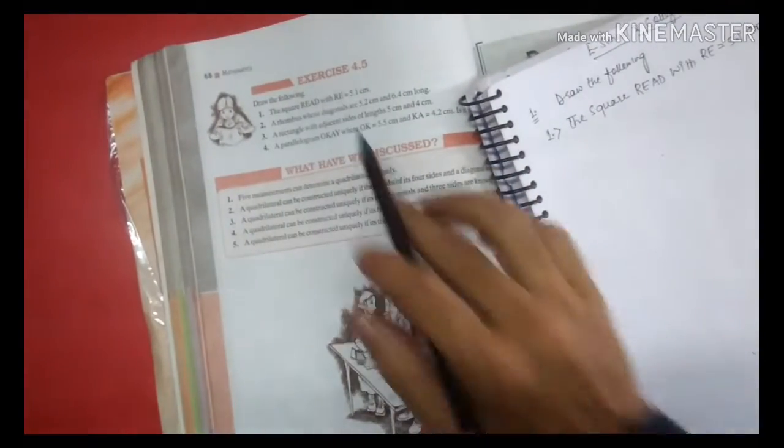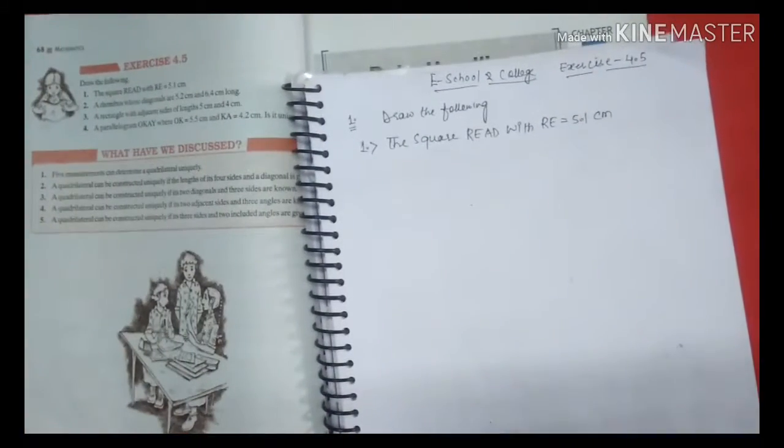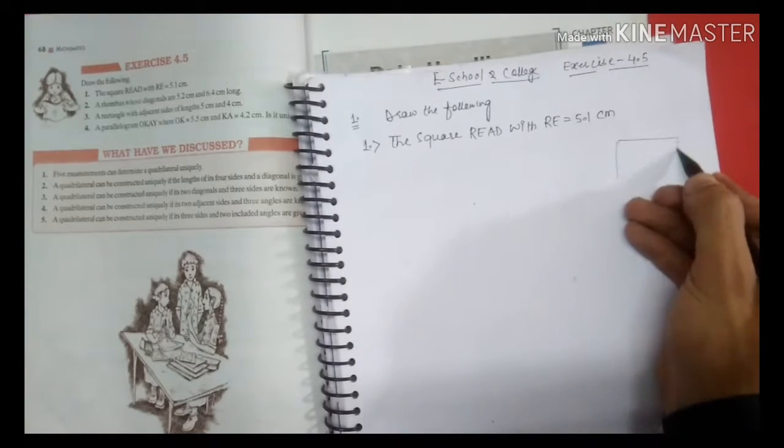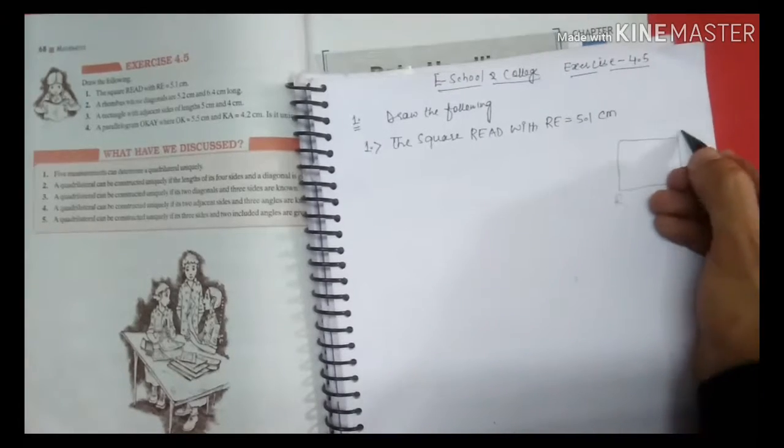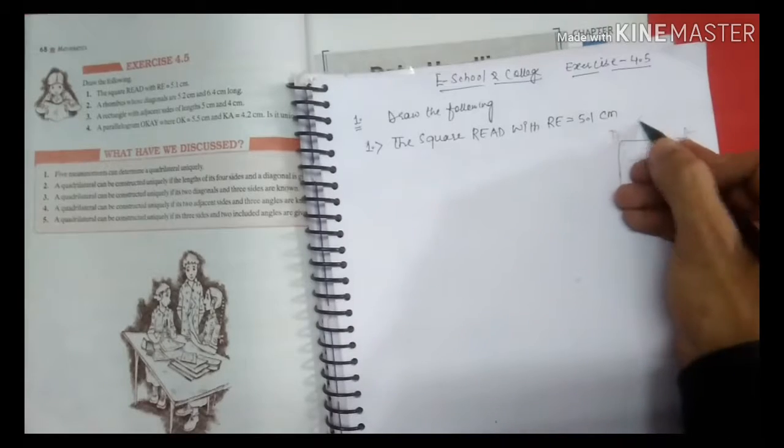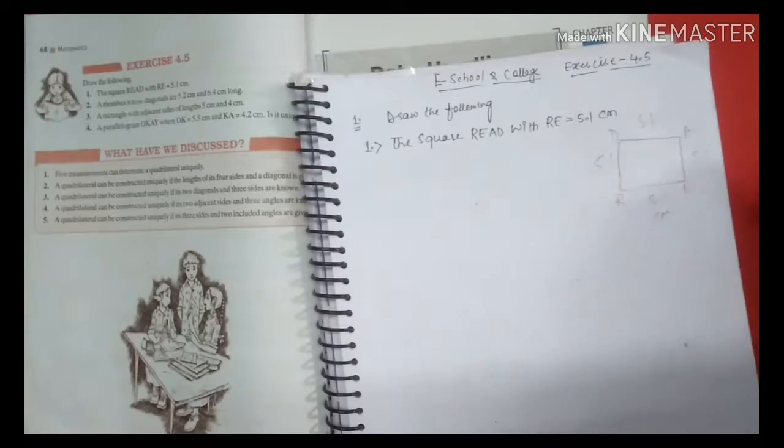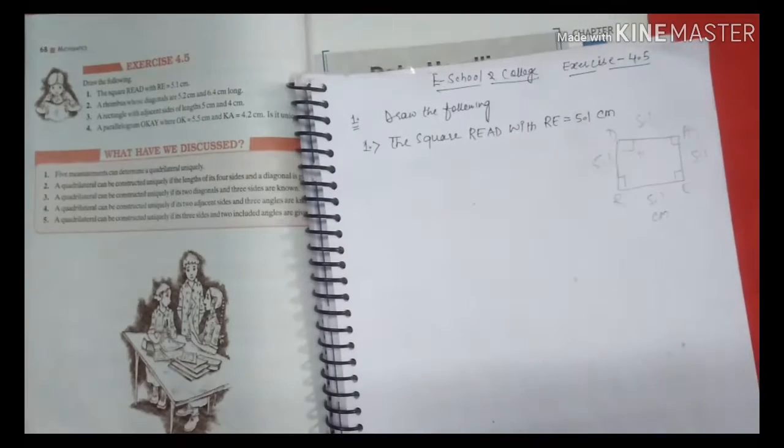Square named REAL with side 5.1 cm. You can see here, draw a square. You can draw a rough sketch, draw a square here. If you have 5.1 cm, this will be 5.1 cm because the sides are equal and the angles are 90 degrees. How do we make it?